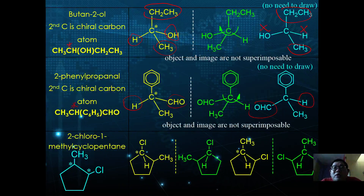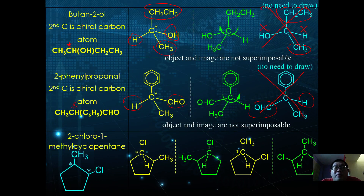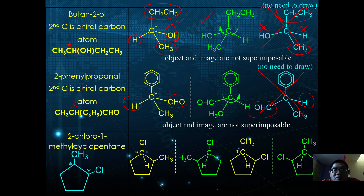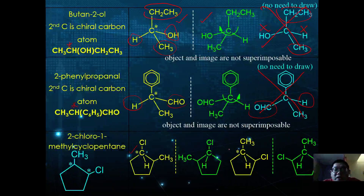Once you identify a chiral carbon atom, you only need to draw the object and its mirrored image — you don't need to show the rotation step. For example, 1,2-dimethylcyclopentane has two chiral carbon atoms. When reflected, neither chiral carbon produces the same image as the object, confirming it has chiral carbon atoms and exhibits optical isomerism.